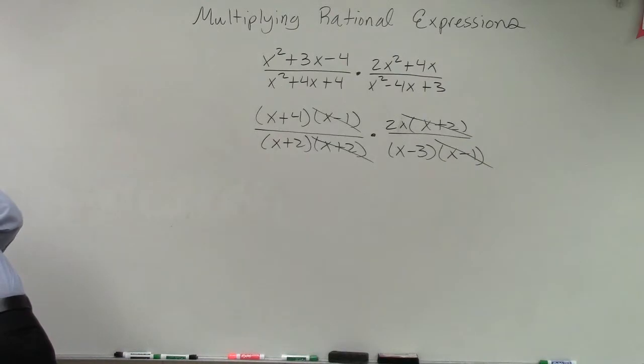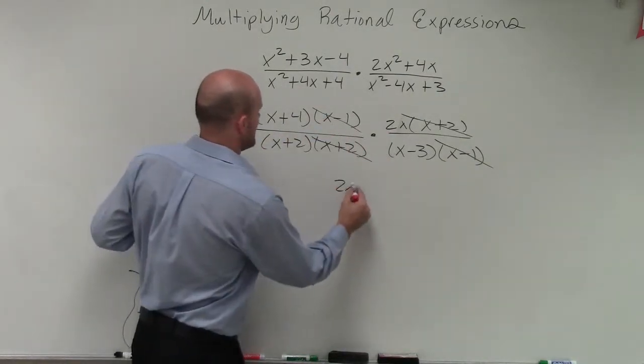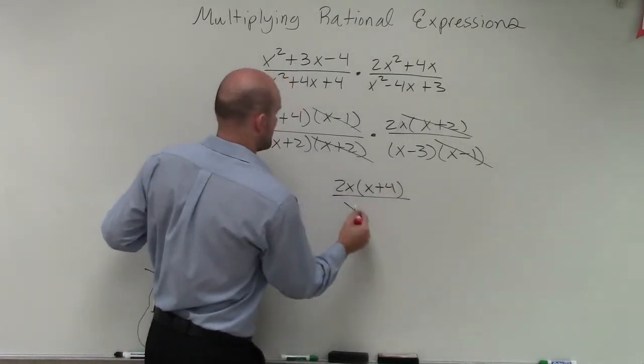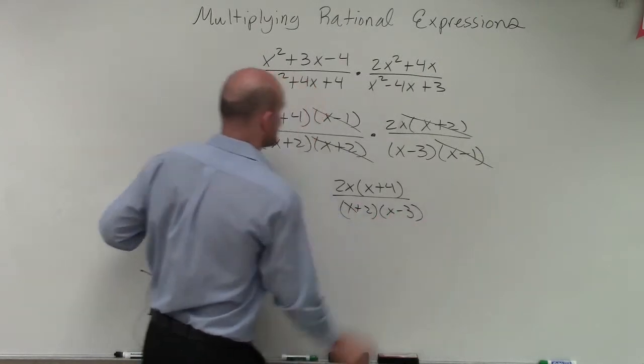OK. Then we can just multiply these out. So I have 2x times x plus 4 all over x plus 2 times x minus 3. We cannot simplify that any further.